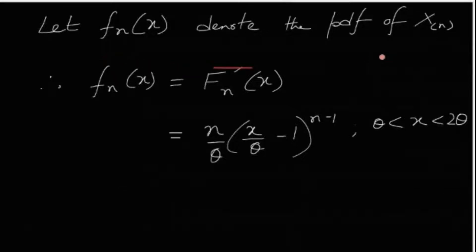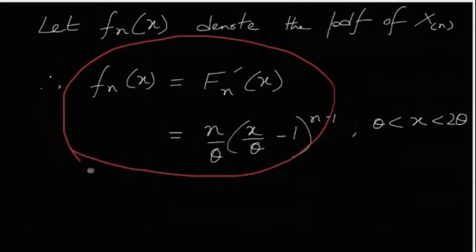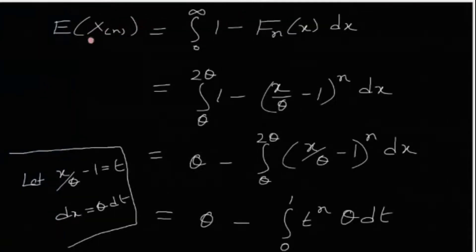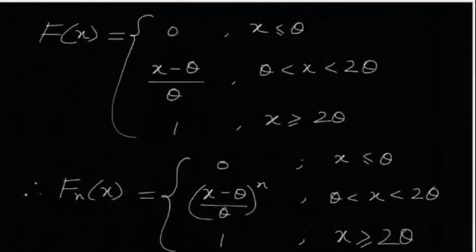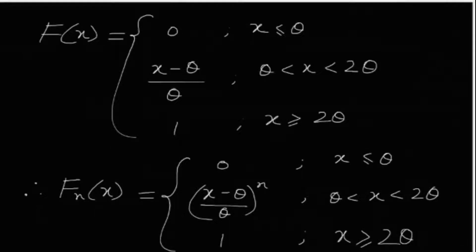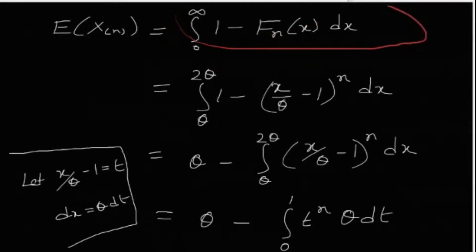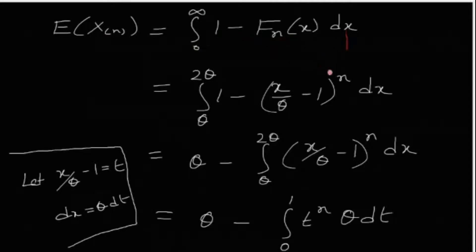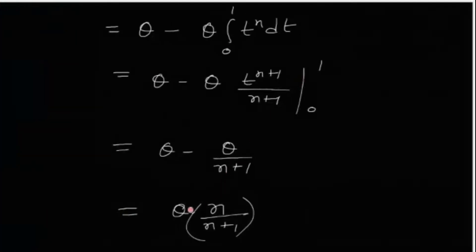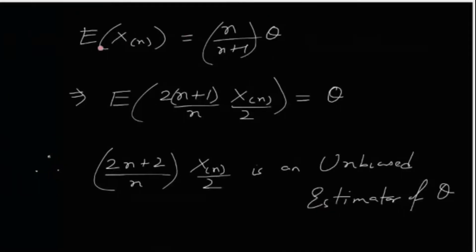Let fn(x) denote the PDF of X_(n). Taking the derivative of the CDF, fn(x) = (n/θ) · ((x/θ) − 1)^(n−1) for θ < x < 2θ. Since X_(n) is a positive random variable taking values between θ and 2θ, its expectation can be computed as ∫₀^∞ [1 − Fn(x)] dx. Integrating gives E[X_(n)] = n/(n+1) · θ · (some factor), which evaluates to E[X_(n)] = n·θ/(n+1) · 2, simplifying to E[X_(n)] = 2nθ/(n+1).